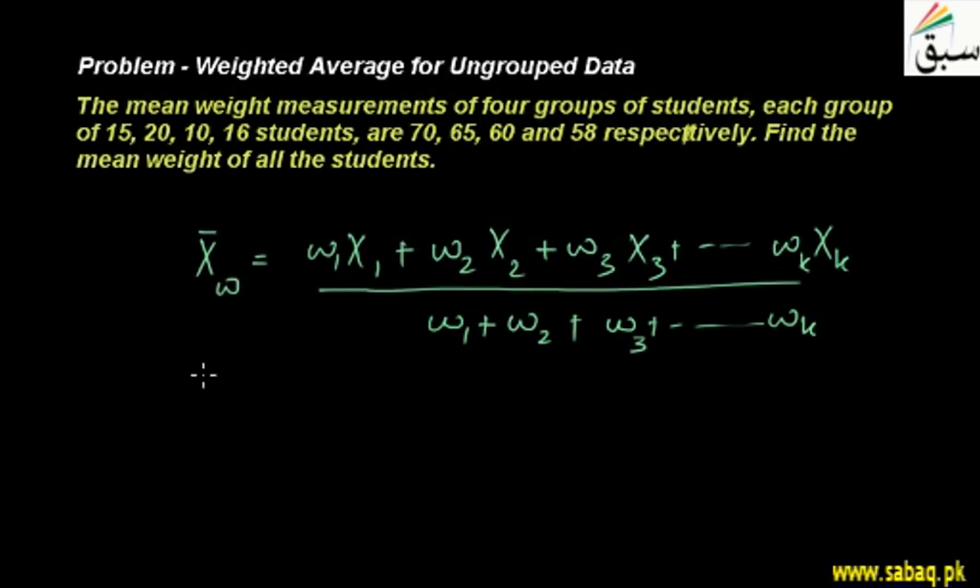Suppose we have 15, 20, 10, and 16. Then we have weightage. This becomes w1, w2, w3, w4. And you have average scores.